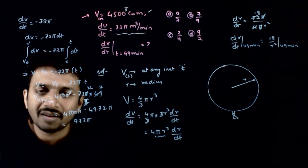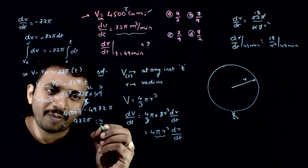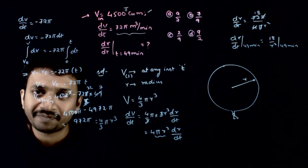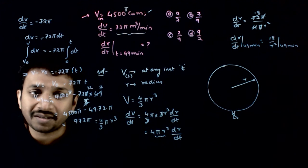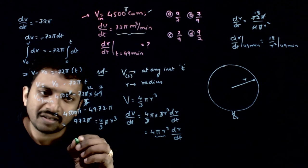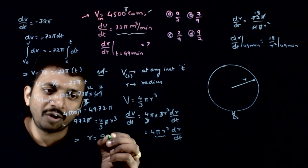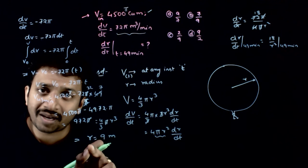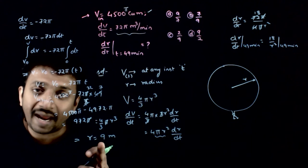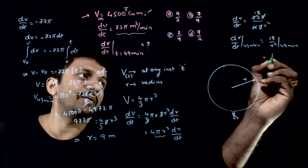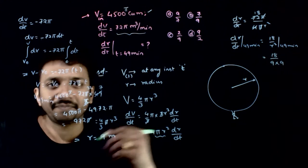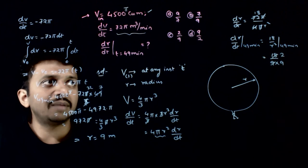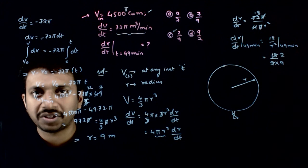You can do the calculations. Once you get this volume, you can equate it to (4/3)πr³. The π and π get cancelled, and if you calculate r, it turns out to be 9 meters. That means at time t = 49 minutes, r = 9 meters. You can just substitute this r into the expression: dr/dt = 18 divided by (9 × 9). It gets cancelled 2 times, so 2/9 will be the right answer to this question. Thank you.